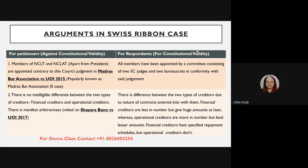Now let's start with the arguments in the Swiss Ribbons case. The first argument was that members of NCLT and NCLAT are appointed contrary to the Supreme Court's judgment in Madras Bar Association vs Union of India 2015, popularly known as the Madras Bar Association 3 case. The petitioners said the appointments were contrary to the court's direction, whereas the respondents — the Union of India — said all members were appointed by a committee consisting of two Supreme Court judges and two bureaucrats in conformity with that judgment.